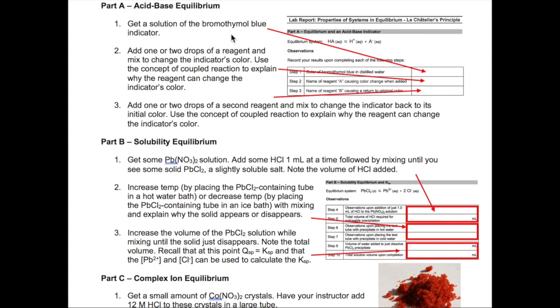One, get a sample of bromothymol blue and record its color as indicated here on your lab report. Two, think about a reagent that will cause the color of this solution to change and add one to two drops of that reagent, mix it with a stirring rod, and see if the color changes. If it doesn't, add one or two drops more and then check again. Record the formula of this reagent in your lab report as indicated here.